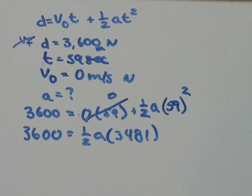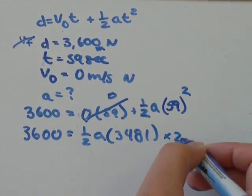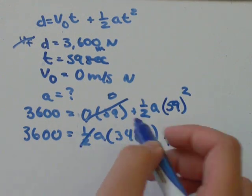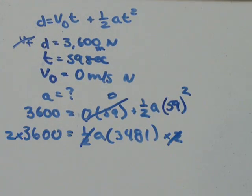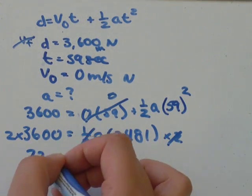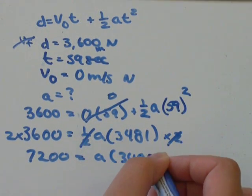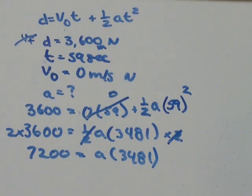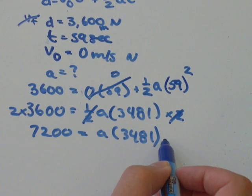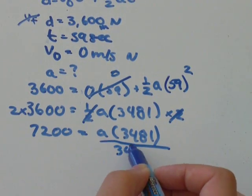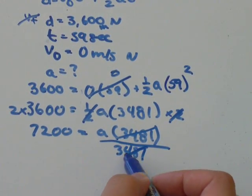So to solve for a, I think the first thing I'll do is multiply by 2, so that that half will cancel out. So 3,600 times 2 is 7,200, and that equals a times 3, 4, 8, 1. To get a by itself, you just need to divide by 3, 4, 8, 1, so that those cancel.